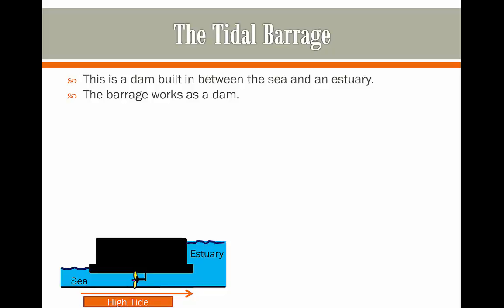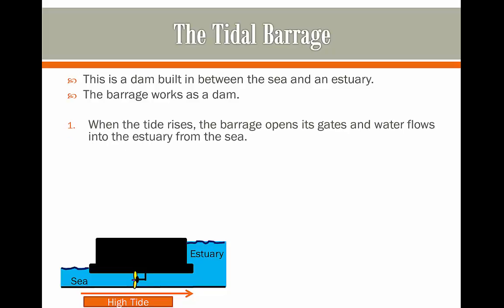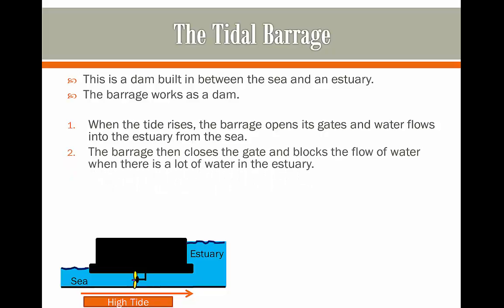In times of high tide, the tide rises and the barrage opens its gates, and the water can flow into the estuary from the sea. Once we have all of the water flowing in from the sea to the estuary, we get a big build-up on the side of the estuary. Then the barrage closes its gate and blocks the flow of water when there is a lot of water in the estuary.